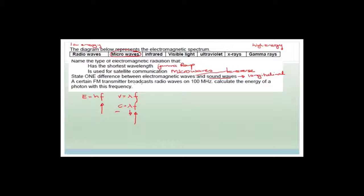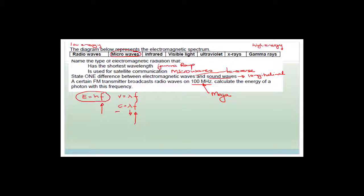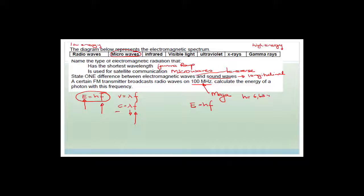A certain FM transmitter broadcasts radio waves on 100 megahertz. Calculate the energy of a photon with this frequency. We're going to use E = hf because we want the energy. H is Planck's constant and it is on our formula sheet: 6.63 × 10⁻³⁴ joule-seconds.